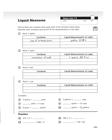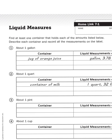The first four problems are something that you're going to have to figure out on your own because it requires you to look around your house. The instructions say find at least one container that holds each of the amounts listed below.